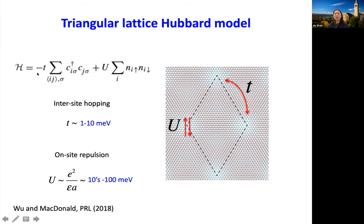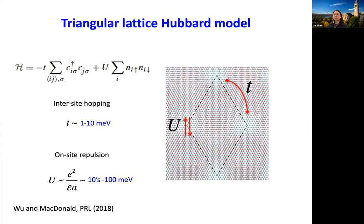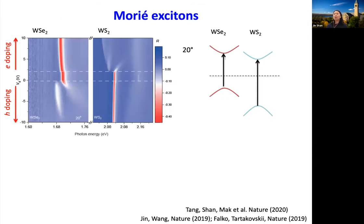The inter-site hopping parameter T is calculated around 1 to 10 meV, and the on-site Coulomb repulsion is on the order of 10 to 100 meV. The inter-site hopping can be tuned by changing the twist angle between the two layers. So we have a tunable system — you can tune the ratio of U over T and get it into the regime with a large U/T ratio. All those predictions of strongly correlated phases are expected to occur in the system. The question is, from an experimentalist's point of view, how do you probe it?